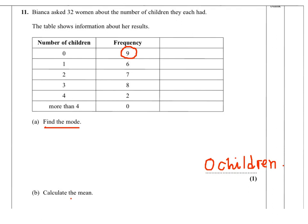On question B we need to work out the mean. The mean is given by the number of children, the total of children, divided by the number of women.